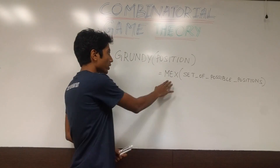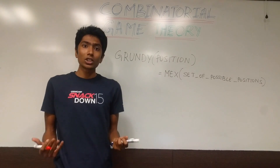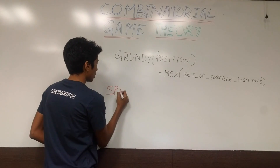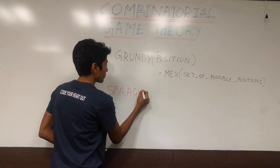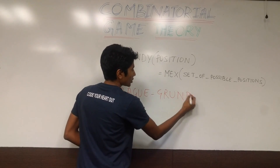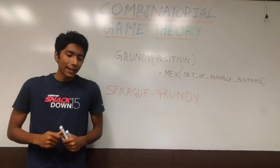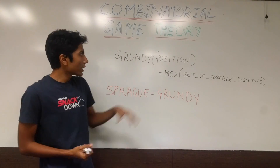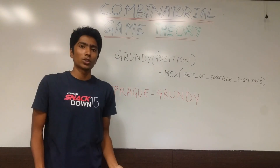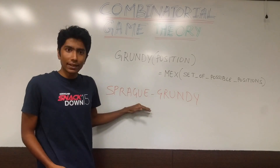The reason why we wanted this is going to be very clear now. We have this theory called Sprague-Grundy. These are two mathematicians who actually formulated this theory. They say that using Grundy numbers, you can tell if a person is winning or losing a position — for impartial games, of course.